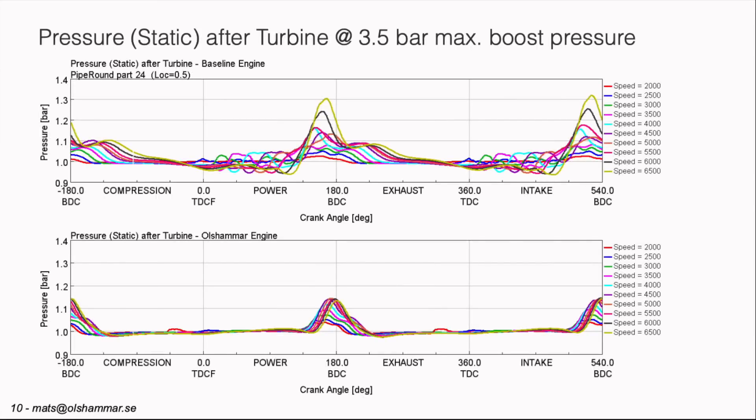And after the turbine we can see that the top one shows the baseline engine and we have a lot of fluctuation in the pressure after the turbine. And we also have a little bit higher peaks compared to the lower curves. And they are very smooth these curves and the peaks are very low. So there is little energy left in the exhaust after the turbine. And we can also notice that the temperature is also lower at the turbine.